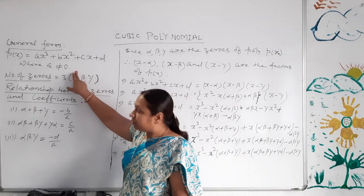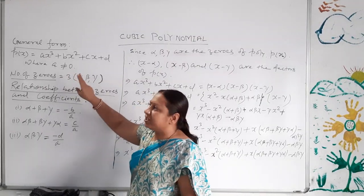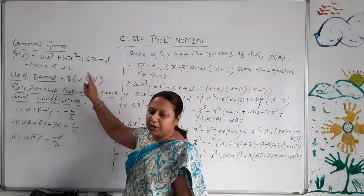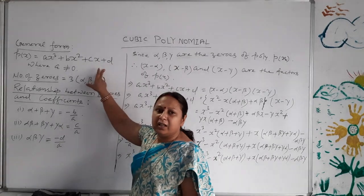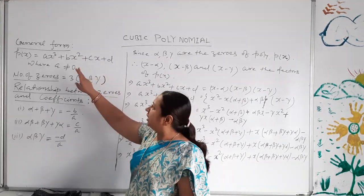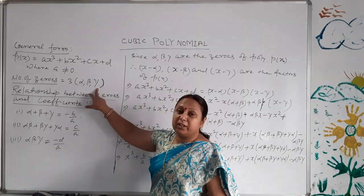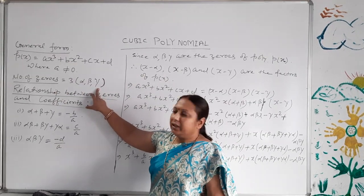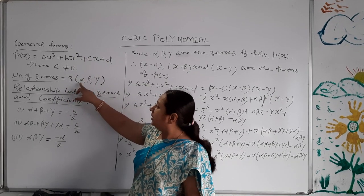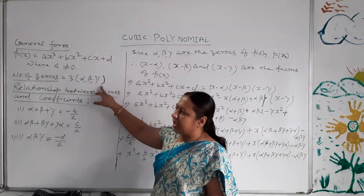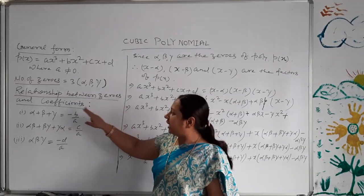A cannot be equal to 0, because if a equals 0 it hampers the existence of the cubic polynomial. So a cannot be 0, while b, c, and d can be 0 — they are real numbers. The number of zeros depends on the degree of the polynomial, so the number of zeros for this cubic polynomial is 3, named alpha, beta, and gamma. There is a relationship between zeros and coefficients.